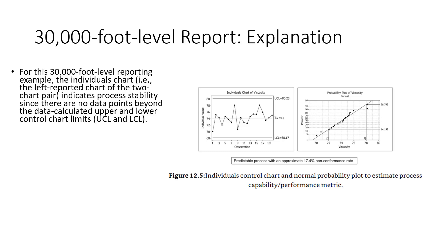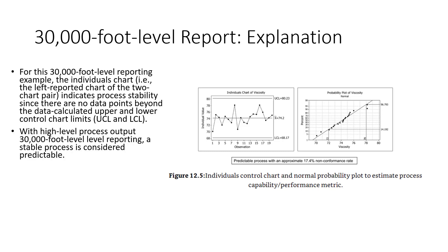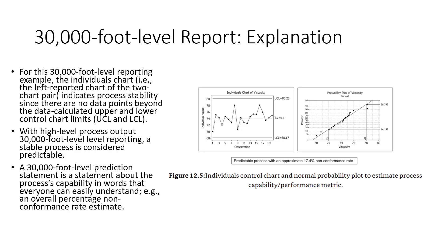With 30,000-foot-level reporting, a stable process is considered predictable. The next obvious question is: what do you predict? That's where you use the probability plot on the right-hand side to determine that value, and then you report it at the bottom of the chart — which is a 17.4% non-conformance rate, which is easy to understand.